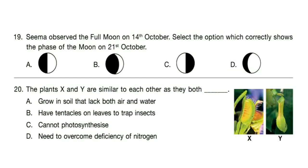Question 19: Seema observed the full moon on 14th October. Select the option which correctly shows the face of the moon on 21st October. Correct answer is option C — exactly half moon.